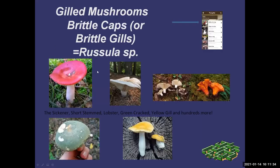We'll talk about Russulas first — they come in a variety of colors and are really pretty. Reds and whites — this one's called the short-stem Russula. If a short-stem Russula becomes parasitized with another fungus, it turns bright orange. Then they are called lobster mushrooms and they are a prized edible.